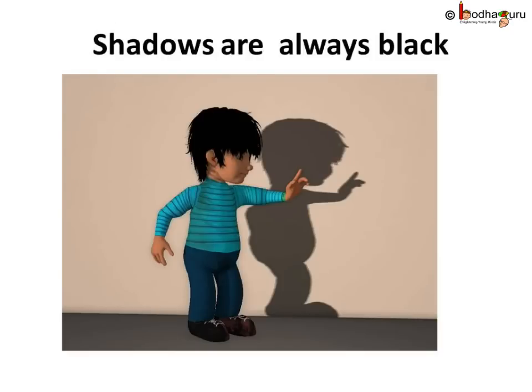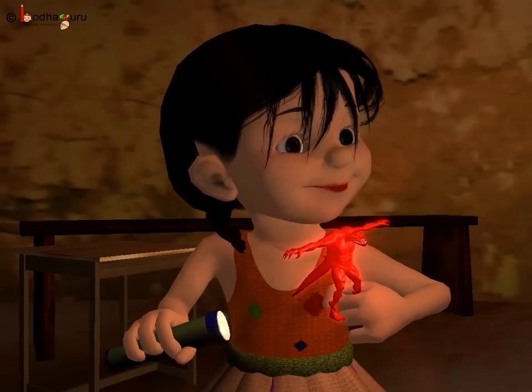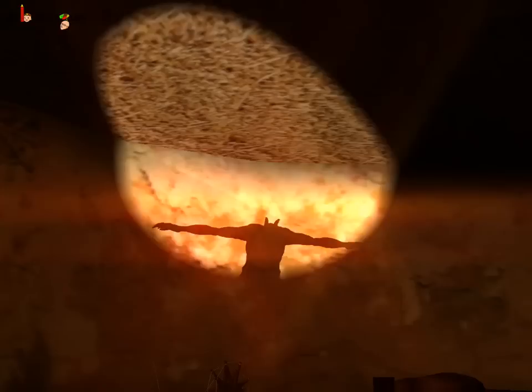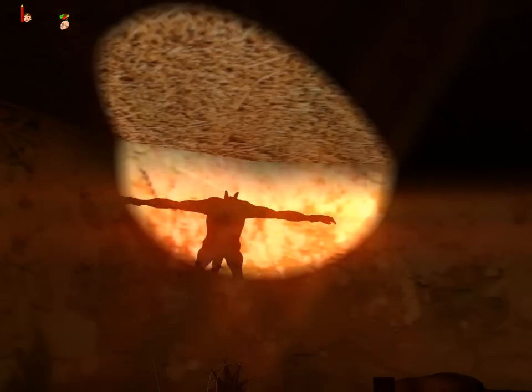Let us see the characteristics of shadow. You are going to a party wearing a colorful dress, but when you look at your shadow, can you see the color of your dress? No. We get a black shadow. Shadows are always black, regardless of the color of the object used to make the shadow. As we saw in the story, the toy used by Sona was red in color, but its shadow was black.